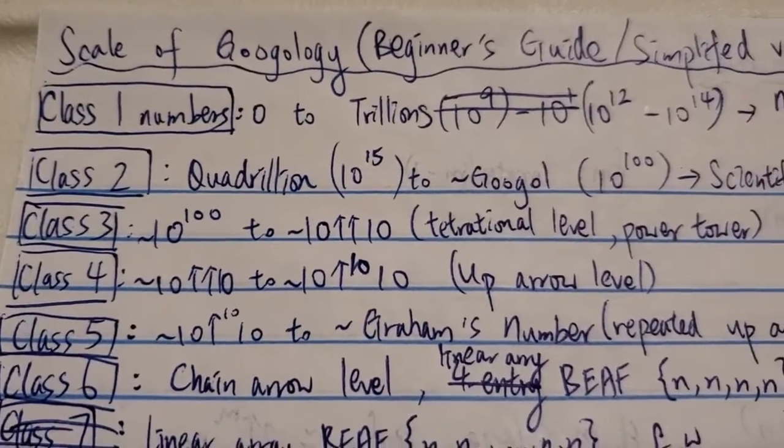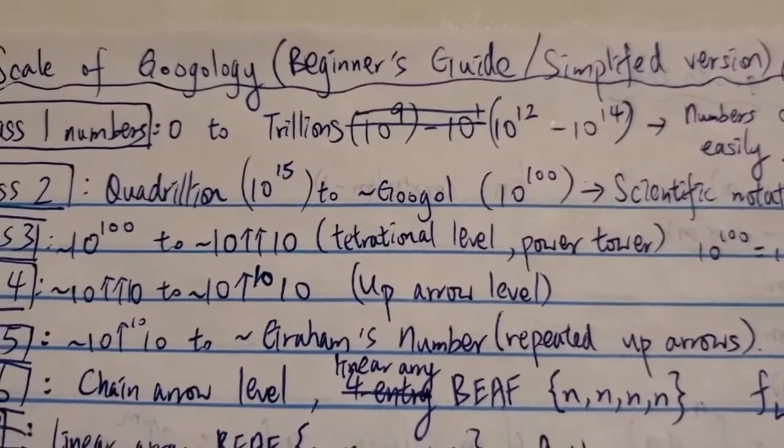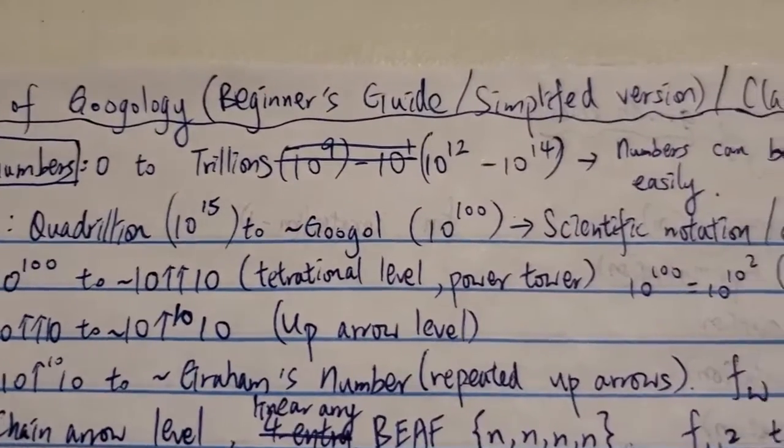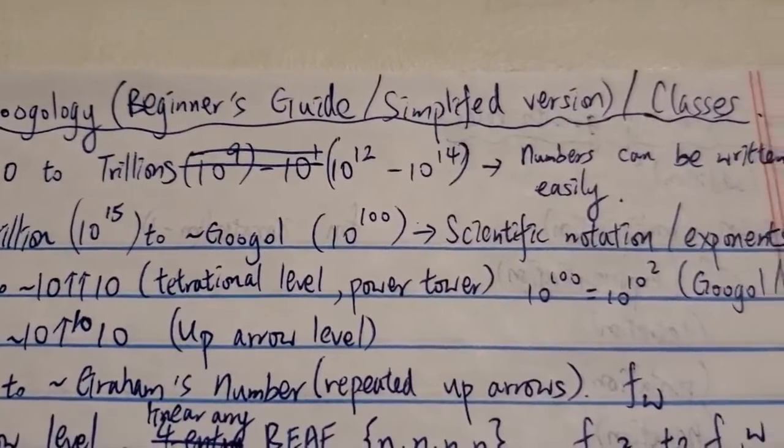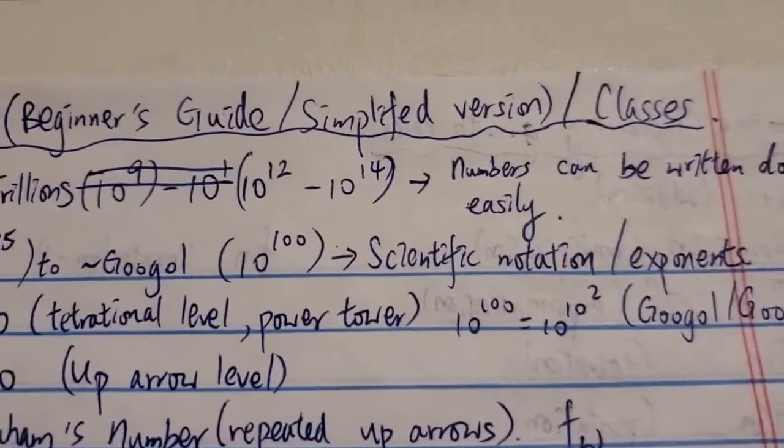Class 2 starting from quadrillion, which is 10 to the 15. So 1 followed by 15 zeros. And of course, this is in the short scale. And up to around a Googol, 10 to the 100.